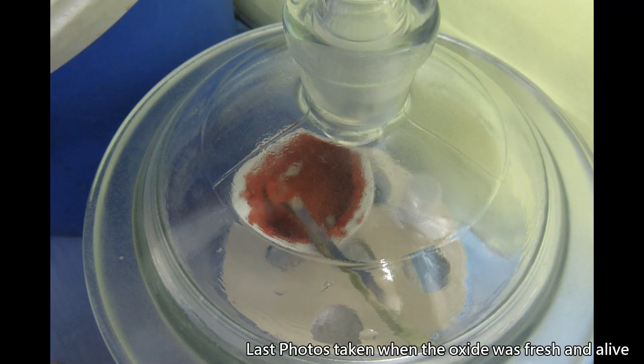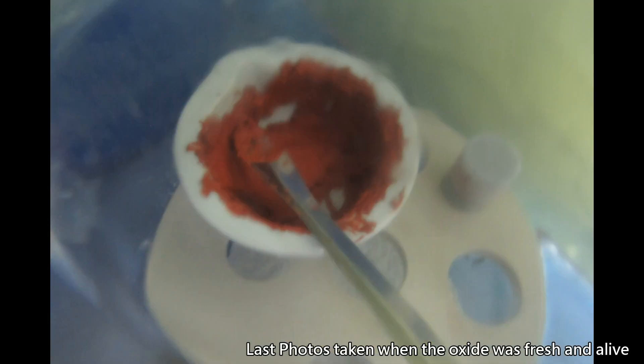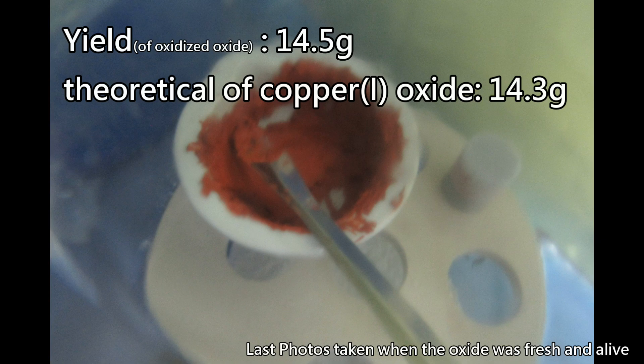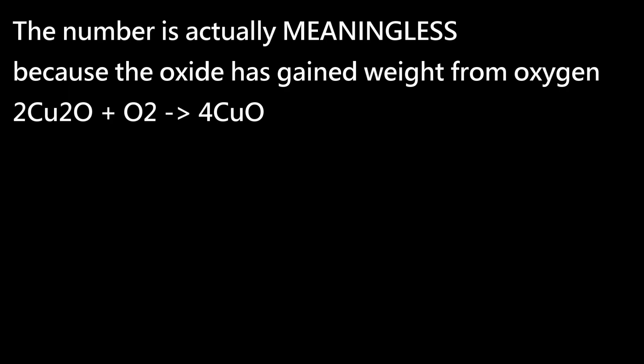Unfortunately, since I was super busy in the week after doing the synthesis, my copper oxide oxidized and turned from dark red to black. Anyway, the mass of the blackish oxide is 14.5 grams, while the theoretical yield is 14.3 grams. Based on the amount of copper sulfate used, the number is actually meaningless as the oxide has absorbed oxygen from the air and has gained weight.